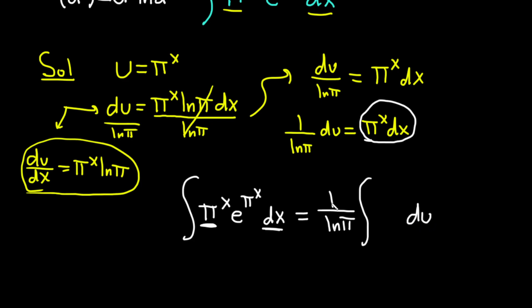So far, the only thing I've replaced is the things that have been underlined here, right? So π to the x dx has been replaced with 1 over ln π and the du. What's left is e to the π to the x. But we know something about π to the x. It's equal to u. This will be e to the u.